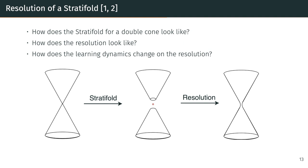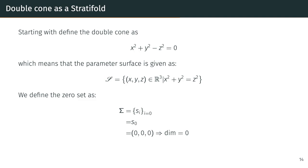With a better understanding of the general concept of stratifolds, we can now apply this to the double cone model. Here we are interested in two main ideas. We start with the descriptive element: how does the stratifold for a double cone model look like? From there we consider how the resolution of the double cone model looks like and how learning dynamics change on the resolution. We again start with the definition of the double cone, from there we define the zero set, a zero-dimensional smooth manifold at the origin, which will give us one of the subsets of the stratifold.